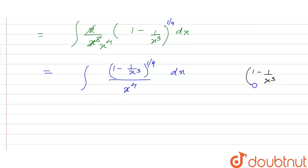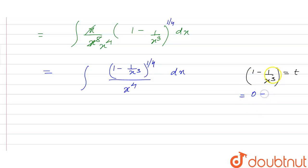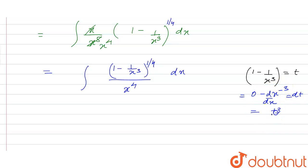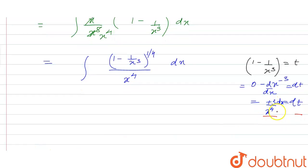Let t equal to 1 minus 1 by x raised to power 3. On differentiating, the differentiation of 1 is 0, and this is x raised to power minus 3. So d by dx gives dt, and the differentiation of that term equals plus 3 by x raised to power 4, so dt equals 3 by x raised to power 4 dx.